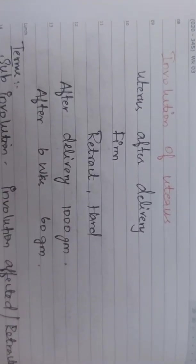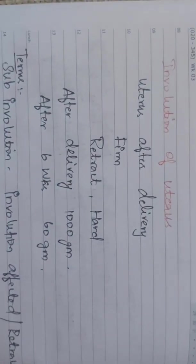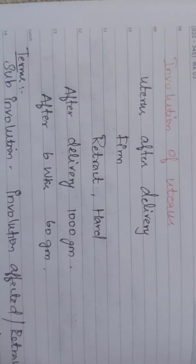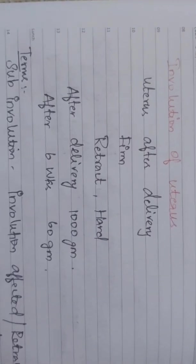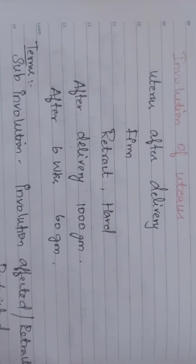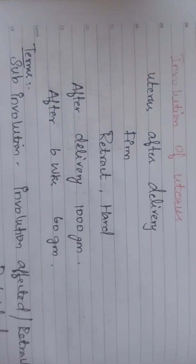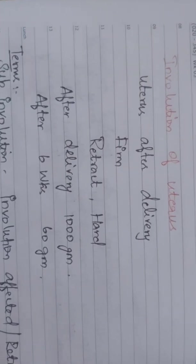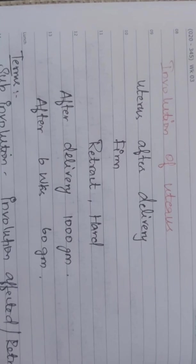Next, involution of uterus. As already said, puerperium is when pelvic organs change to pre-pregnancy state. After delivery, the uterus is firm and retracted hard. Up to six weeks after delivery, uterus size is 1000 grams, but at six weeks it becomes 60 grams. This is the normal process of uterine involution.